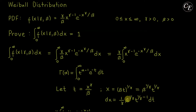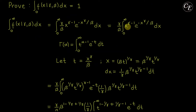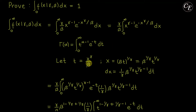Substituting into the integral: for x, we use beta raised to 1 over gamma times t raised to 1 over gamma, raised to gamma minus 1. For the term x raised to gamma over beta, which equals t by our substitution, we simply write t. For dx, we substitute our expression for dx in place of dx.